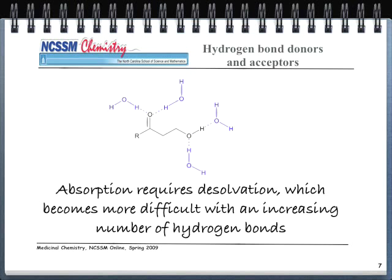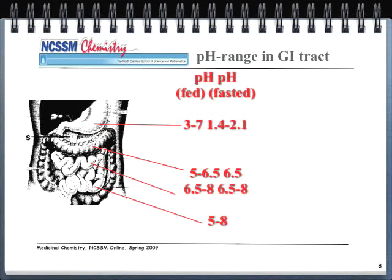Hydrogen bond donors and acceptors are important: absorption requires these molecules to break apart, which gets increasingly difficult with more hydrogen bonds. pH also plays a role — when a drug is placed in the stomach, ionization influences whether it is lipophilic or hydrophilic. The body has both a lipid environment and an aqueous environment, and where the drug is placed influences how well it gets into the body.